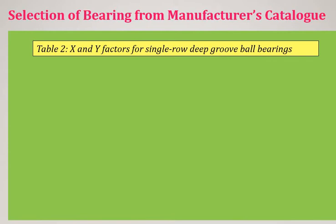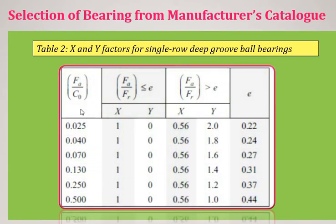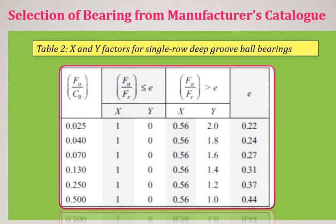Now let us discuss how to find X and Y values using the FA/FR and FA/CO ratios. Assume FA/CO calculates to approximately 0.041 — we select the row where the E value is 0.24. We then check whether FA/FR is less than E or greater than E, and accordingly choose the appropriate column of X and Y values. This gives us the general guidelines for selecting X and Y factors.